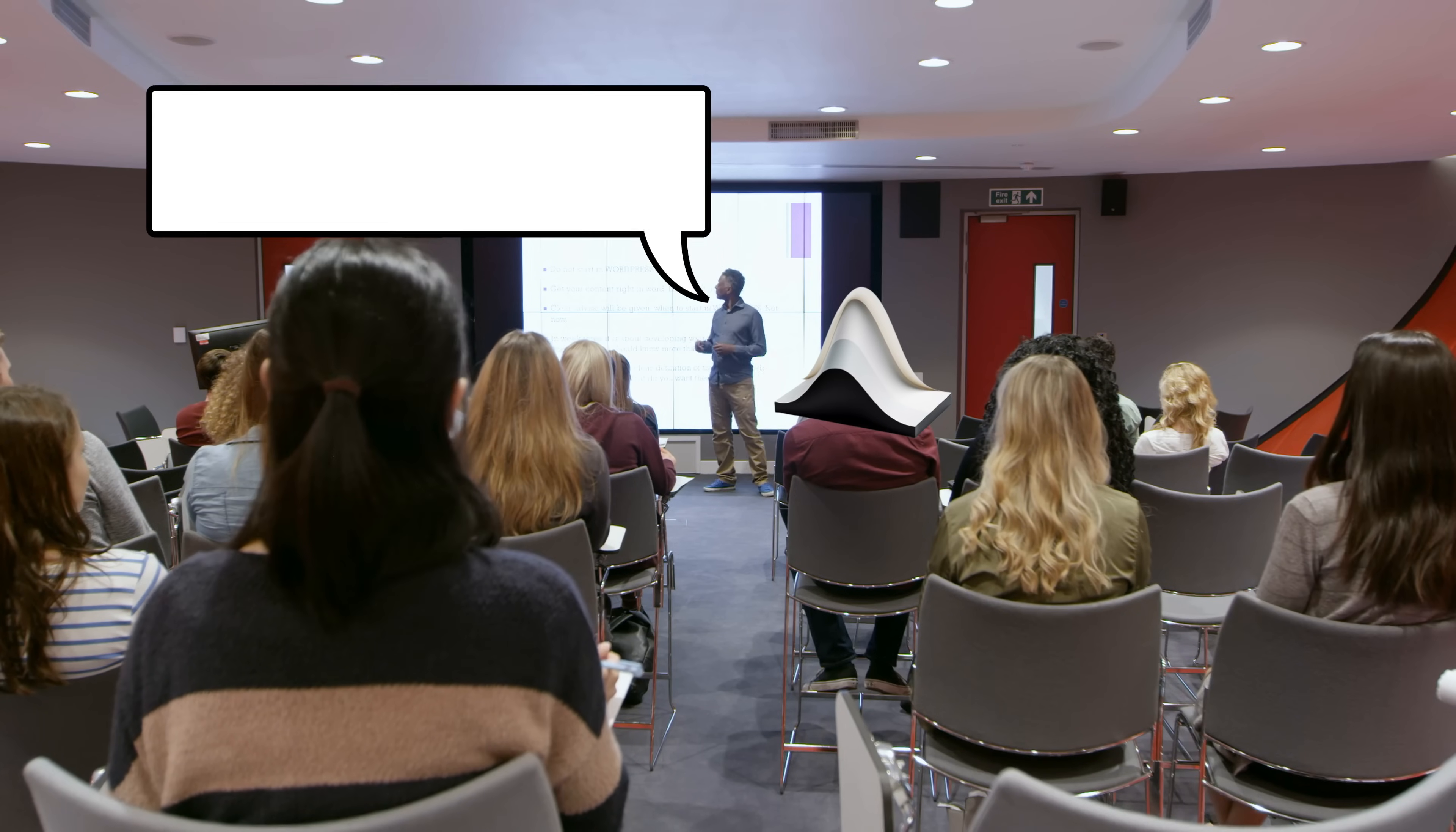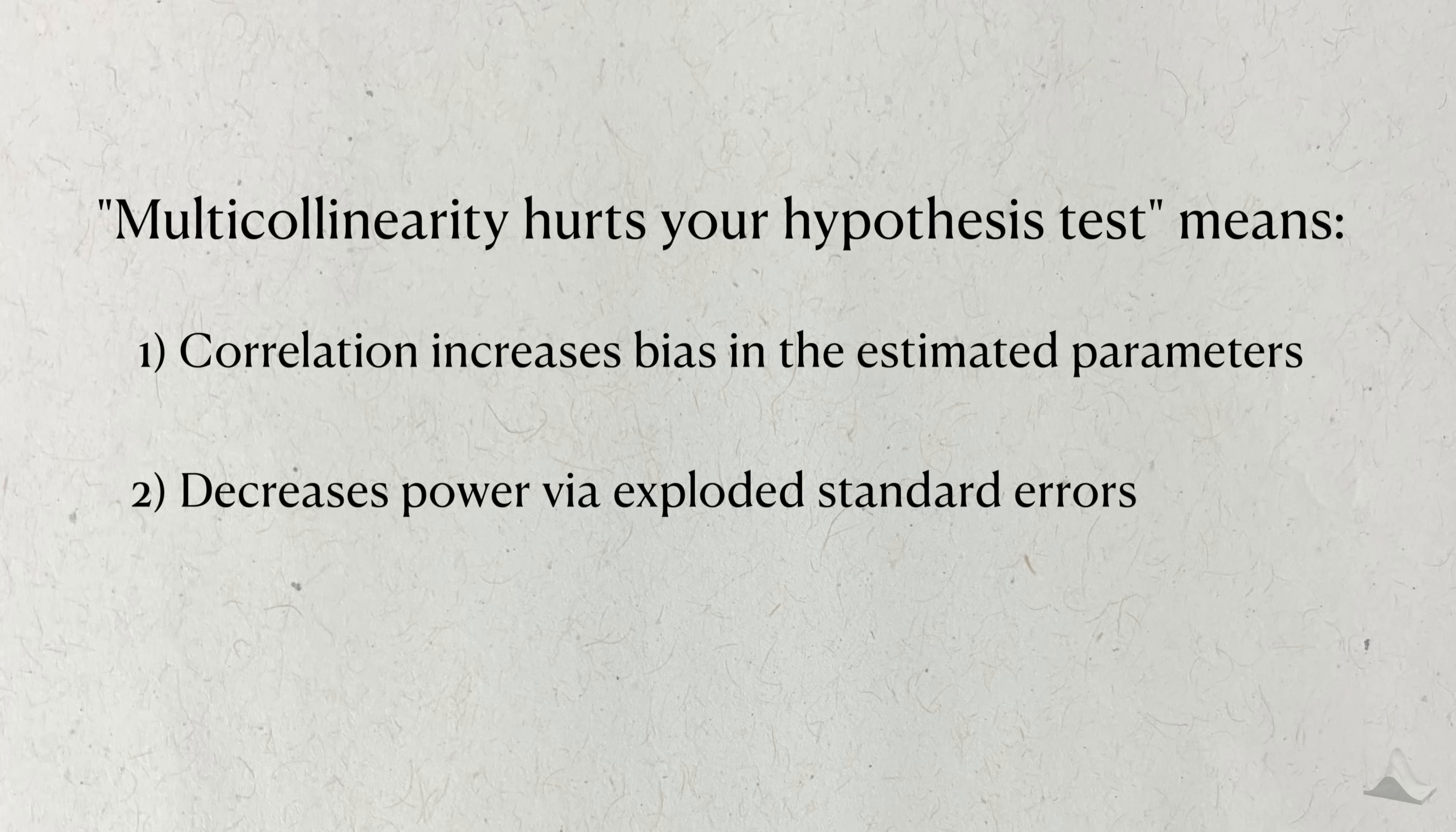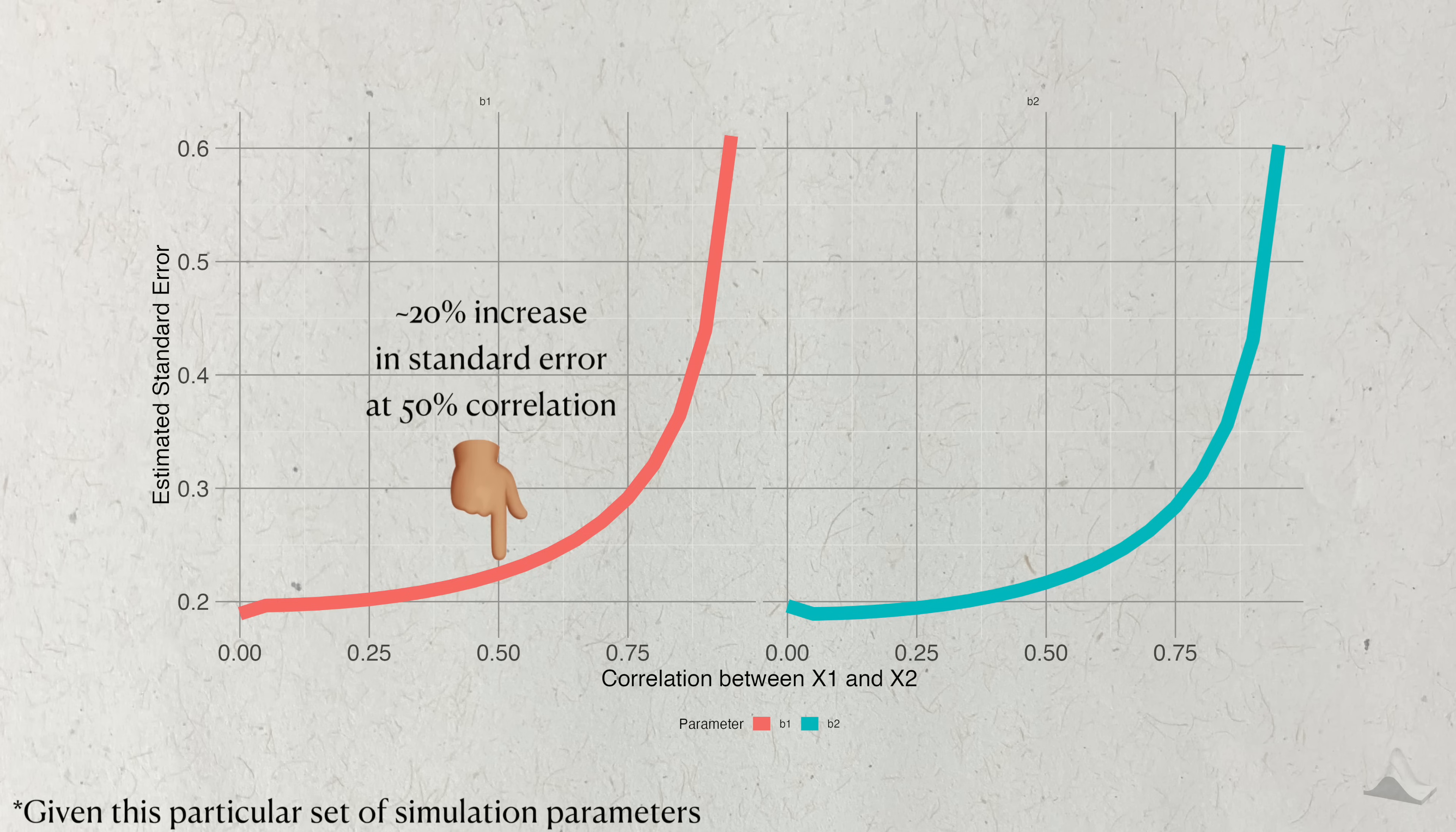To summarize my point, when my professor said that multicollinearity harms your hypothesis test, she was referring to the fact that it 1 increases the bias in the estimation process and 2 explodes your standard errors, which has a downstream effect on power. But let's say you knew that already. You knew that the increased correlation between the regressors ultimately gets captured in this expression for the variance of their estimates. While this intuition can give you the answer, it can't tell you everything. The Monte Carlo approach gives you the extra benefit of quantifying how much the standard deviation will change for a given correlation.